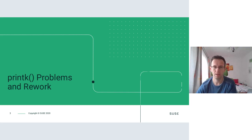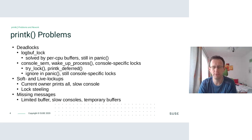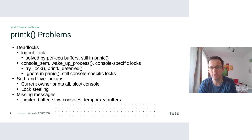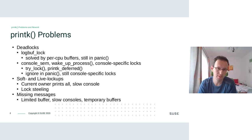Let's start with the first section about printk work. I'll try to be quick because I explained this deeply last year at a conference. I would split the printk problems into three areas: printk could cause deadlocks, soft and live lockups, and some messages might get lost. Deadlocks are caused by locks — there are several locks involved. The one guarding the log buffer is currently mostly solved by redirecting nested printk output to per-CPU buffers, but it's not ideal because messages might get lost.